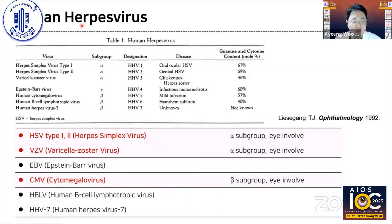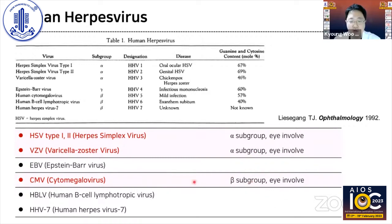The human herpes virus family includes various viruses and is further divided into three subgroups: alpha, beta, and gamma. Among these, herpes simplex virus, varicella zoster virus, and CMV virus are well known to involve the ocular surface. HSV and VZV are in the alpha subgroup, but CMV virus belongs to another group, and CMV virus can produce different features on the ocular surface.